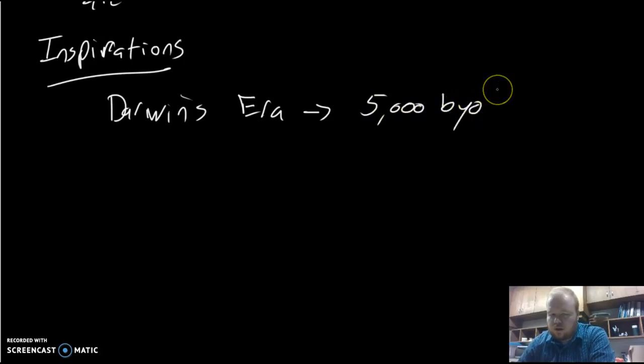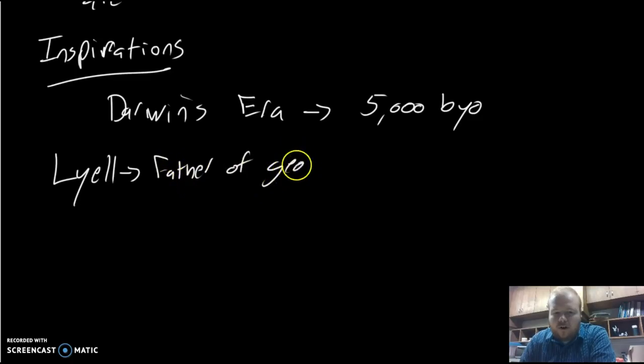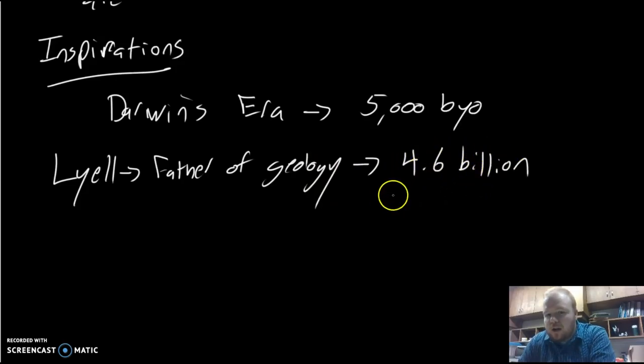In Darwin's era, people thought the earth was about 5,000 years old. As science advanced, this changed. The person who helped come up with this was a man by the name of Charles Lyell. Lyell is considered the father of geology. His big thing is he discovers that the earth is about 4.6 billion years old.